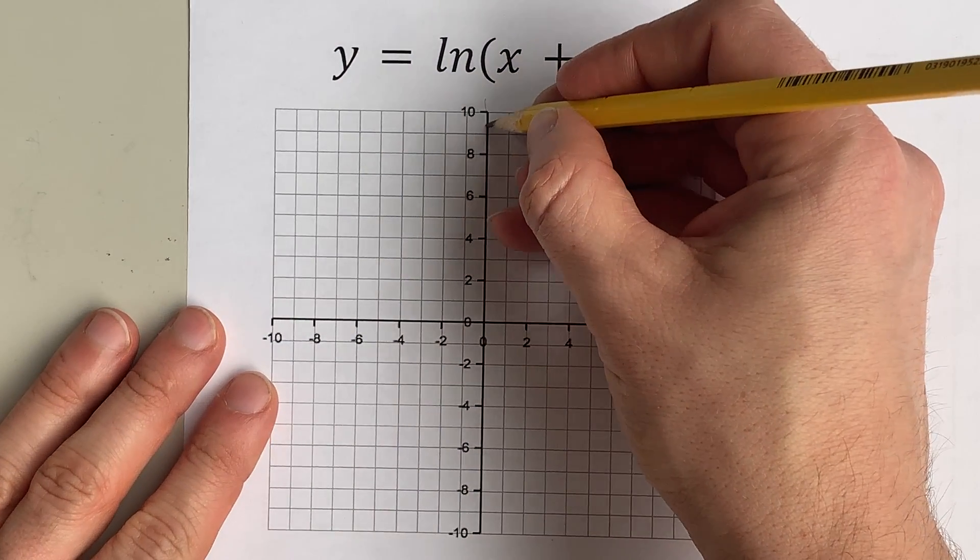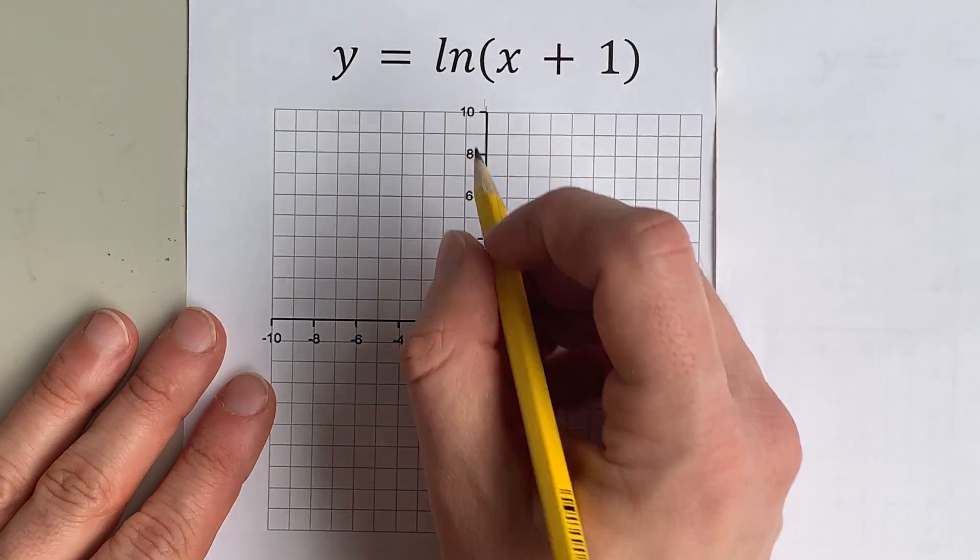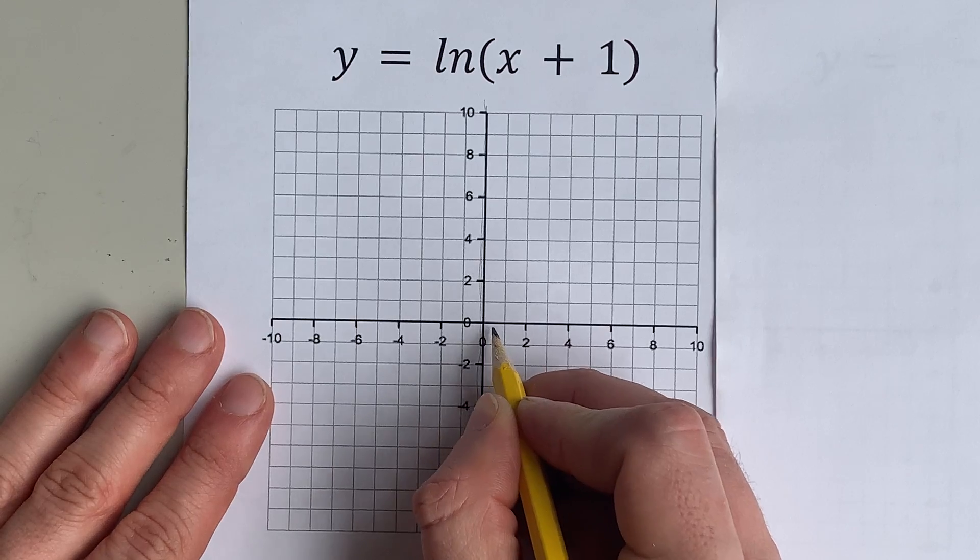ln x has a vertical asymptote here at x equals 0, because you can't take the ln of 0, but you can take the ln of any number that is positive.